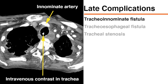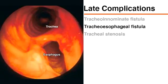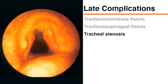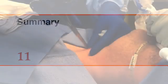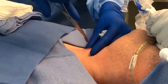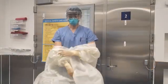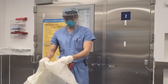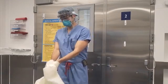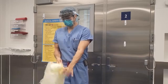Late complications after tracheostomy include tracheoinnominate fistula, tracheoesophageal fistula, and tracheal stenosis. The development of fistulas is a rare complication that requires surgical consultation. Percutaneous tracheostomy can be safely performed at the bedside in patients with a prolonged need for mechanical ventilation. In patients with COVID-19, this procedure can be modified to minimize aerosol generation and exposure to staff.